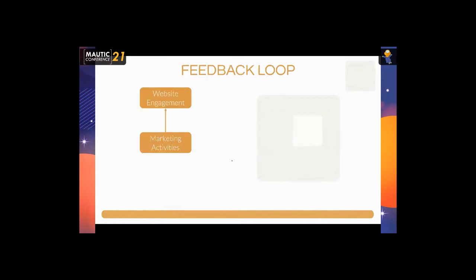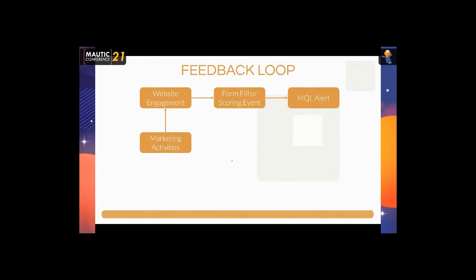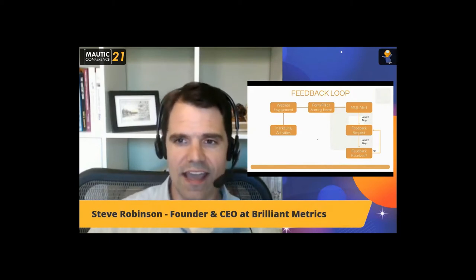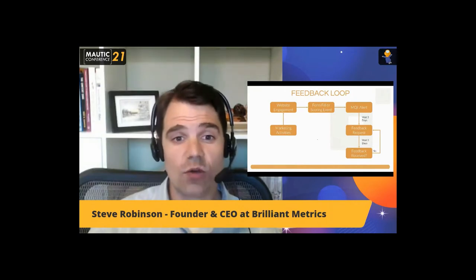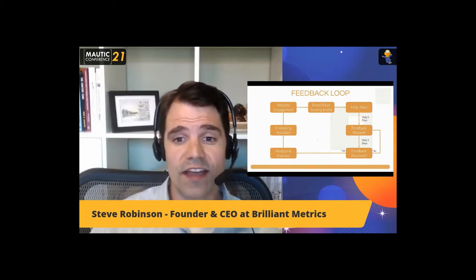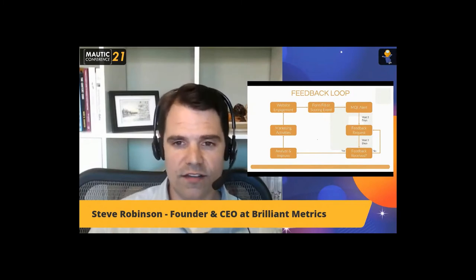Marketing activities lead to website engagement, which leads to a form fill or scoring event, resulting in an MQL alert going to sales. The feedback loop starts there: we wait three days and send a feedback request — was that a good lead? Was it a bad lead? If we've received feedback, we move forward. If not, we continue in this loop every three days asking for feedback. This ensures no lead goes unchecked. We take that feedback, analyze and improve, and then change the marketing activities or scoring to improve the quality of leads we're sending to sales.